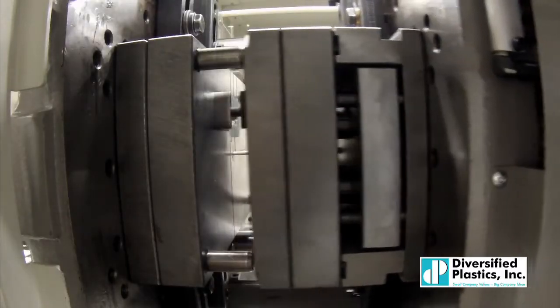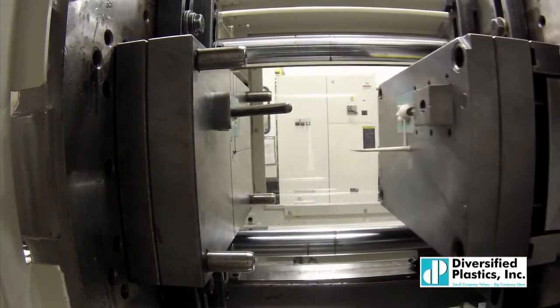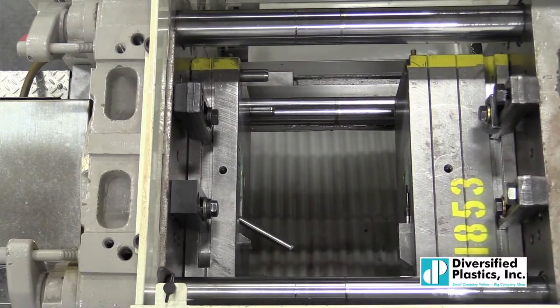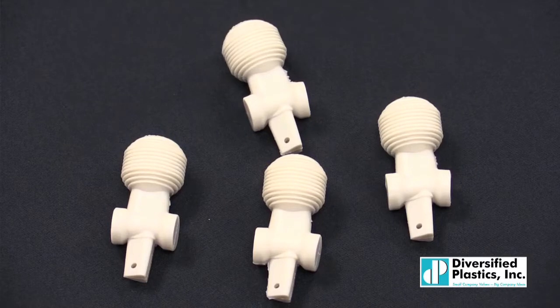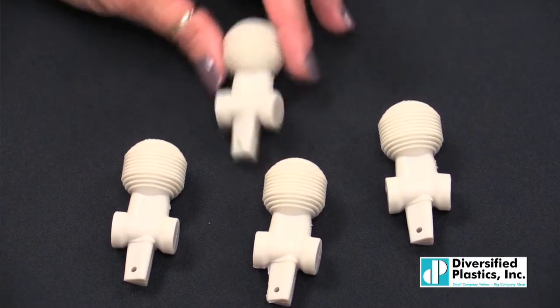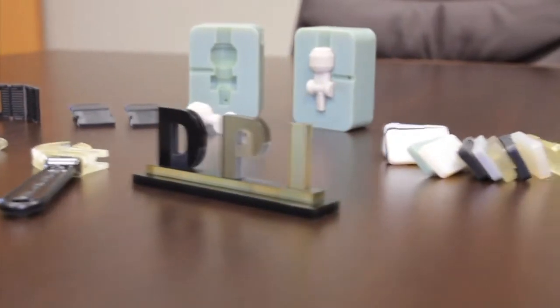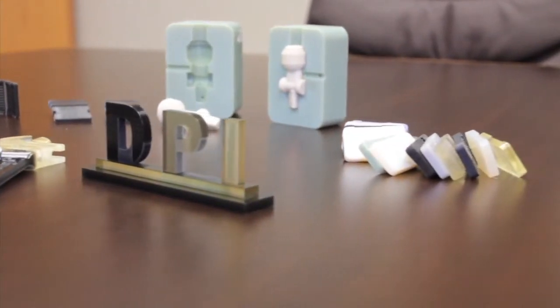With the ability to create cores and cavities, we can injection mold prototype parts. Diversified Plastics is one of the first molders in the country to offer this innovative prototyping approach. It's less expensive and faster than building aluminum tooling and can be completed within 7 business days.